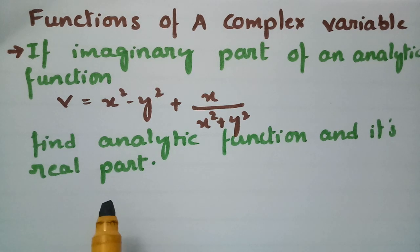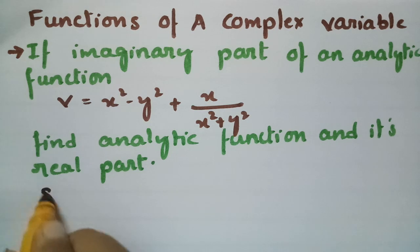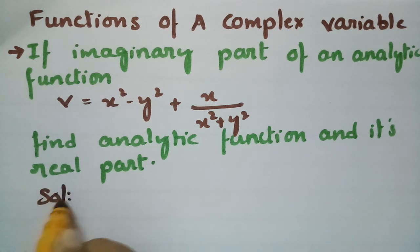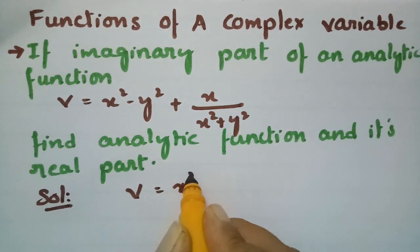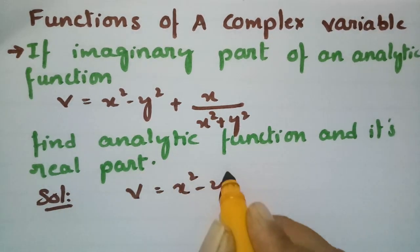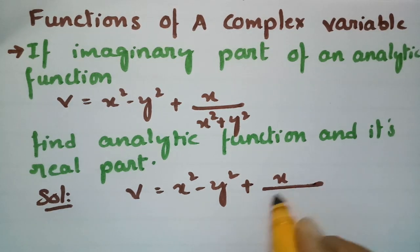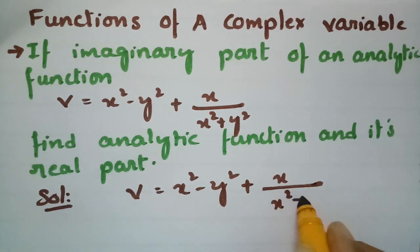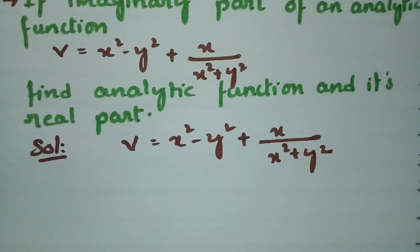The real part is nothing but u of x comma y. What is given? The imaginary part v is given as x square minus y square plus x, divided by x square plus y square.